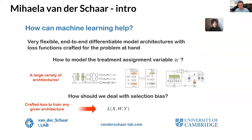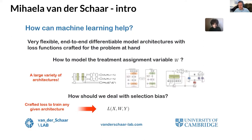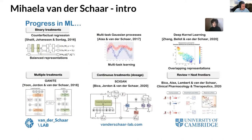While statistical and econometric methods already exist for covariate adjustment, machine learning can further this agenda through flexible end-to-end architectures for learning response surfaces, modeling the treatment assignment variable, and training with a variety of loss functions to deal with selection bias. There has been tremendous progress in the last five years in machine learning for ITE, for instance in binary treatments with early work by Shalit, Johansson, and Sontag, followed by work using deep learning methods, multi-task Gaussian processes, and deep kernel learning. Research has also gone beyond binary treatments to multiple treatments, continuous treatments including dosage, and treatment effects over time.